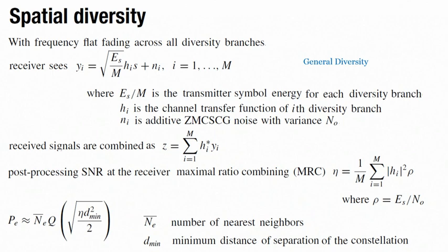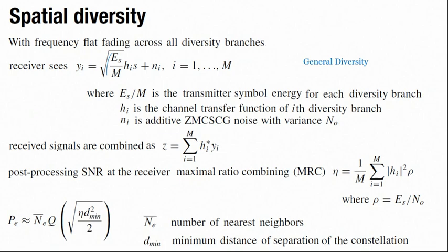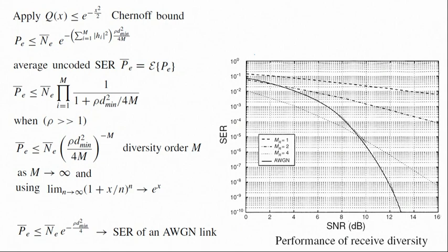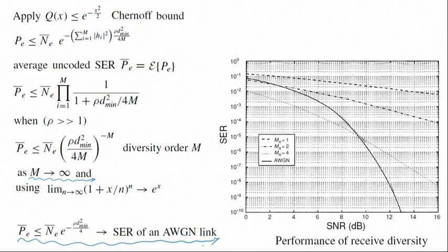We started with the discussion on general diversity, where we studied a system with the understanding that each diversity branch has a power of Es/m. Overall with m branches there is a power of Es. We also studied the way to calculate error probability and concluded that as the order of diversity extends towards infinity, the probability of error gets asymptotically closer to an AWGN link. For all of this we used the Chernoff bound as well as the MGF of the Frobenius norm squared of H.